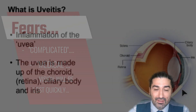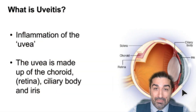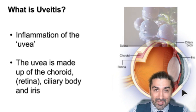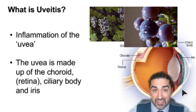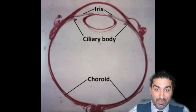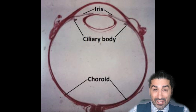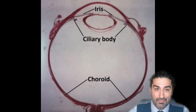So what does uveitis mean? We're talking about inflammation inside the eye. Uvea itself is the Latin for grape, because of the appearance of the organ attached to the stem-like optic nerve, and the term uveal tract refers to these three structures: the iris, the ciliary body and the choroid. We include the retina within the bundle as well, even though it isn't strictly speaking part of the uvea.